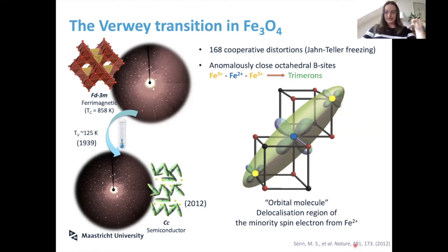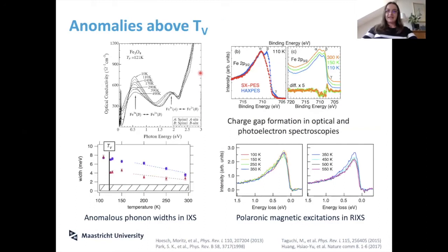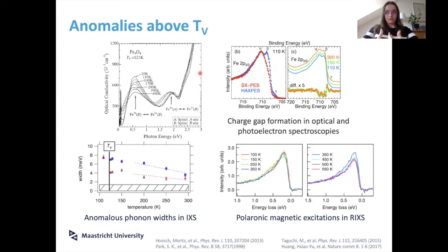This is possible because the octahedra share space, so if you compress an axis due to the Jahn-Teller distortion they get close enough to delocalize the minority spin electron. I advise you to check out the paper if curious. But there is something remarkably weird in magnetite even in the cubic phase — the one we thought was perfectly established. Even in the old days, physical properties didn't quite add up with what you'd expect from a cubic semi-metallic spinel.